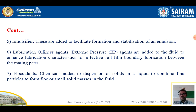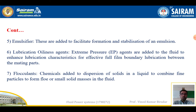The fourth type is an emulsifier — additives added to facilitate the formation and stabilization of an emulsion. The sixth type is a lubrication or oiliness agent, also called an extreme pressure (EP) agent. EP agents are added to a fluid to enhance the lubrication characteristics for effective full-film and boundary lubrication between two mating parts of a hydraulic component.